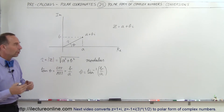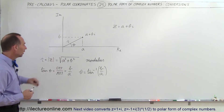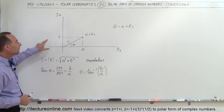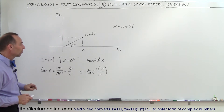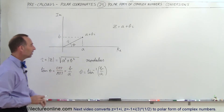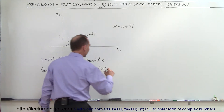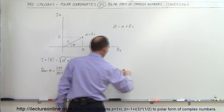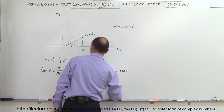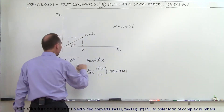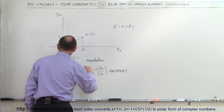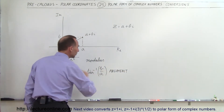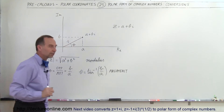Theta is one of the two variables in the polar coordinate system, and this is known as the argument. So R is considered the modulus, and theta is considered the argument.